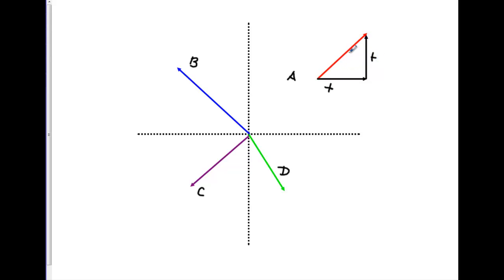Remember, the resulting vector or hypotenuse will always start with a tail down here and end with a head up here. You don't have to add the x vector first — you could add the y vector first. If I go this way with a positive y and then turn around and go with the x, I get exactly the same thing — a rectangle. In this example, I have a positive x component and a positive y component.